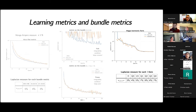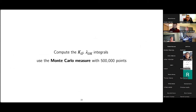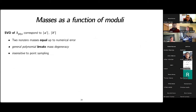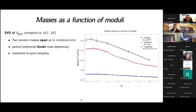We can also do the same for the Higgs harmonic form, which trains relatively quickly. We get slightly worse Laplacian measure results than the bundle metric, expected because the neural network is the same size but now predicts two functions — σ is complex-valued whereas the other two were real. With all this data we compute the K_{ij̄} and λ_{ijk} integrals using Monte Carlo with 500,000 points. Taking the singular value decomposition of the physical Yukawa couplings λ_physical, the two masses turn out equal due to the symmetry of the chosen polynomial — a generic polynomial will break this mass degeneracy.